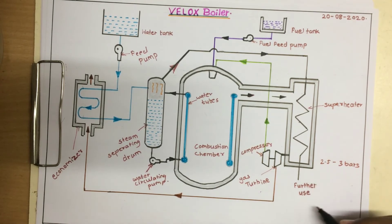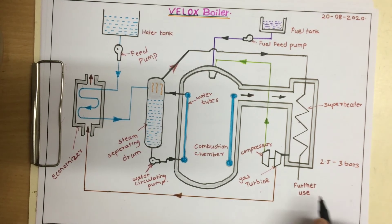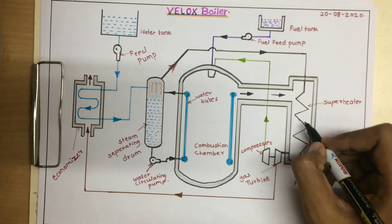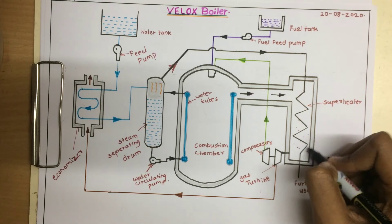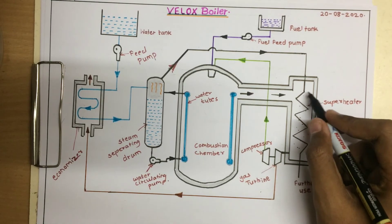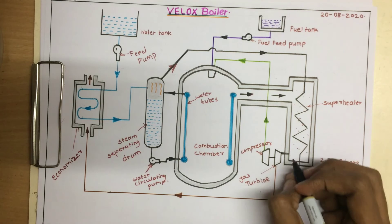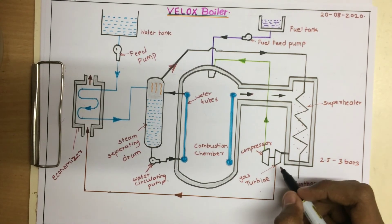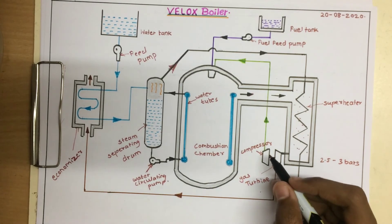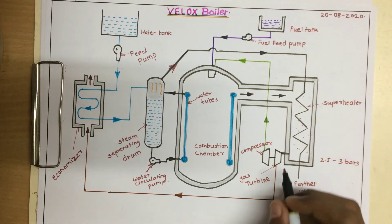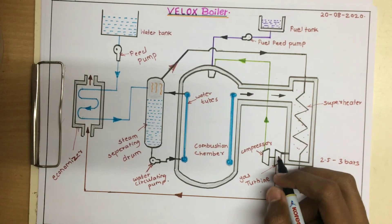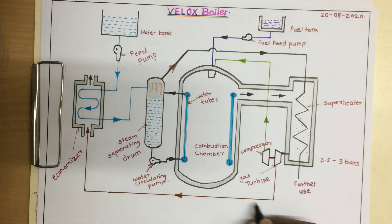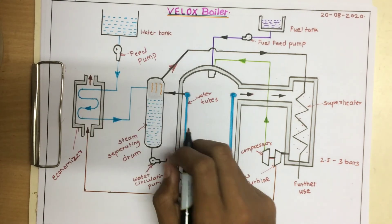The superheated steam is then passed to further use. The remaining flue gases are passed to the gas turbine, and with the help of these gases the gas turbine is run. This compressor also runs with the energy produced by the flue gases. At last, the flue gases are passed to the economizer and the whole system runs.